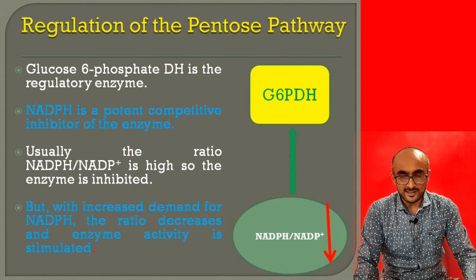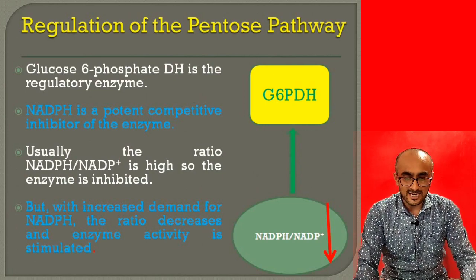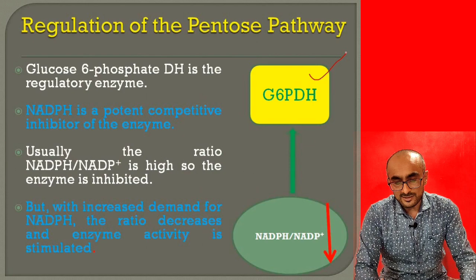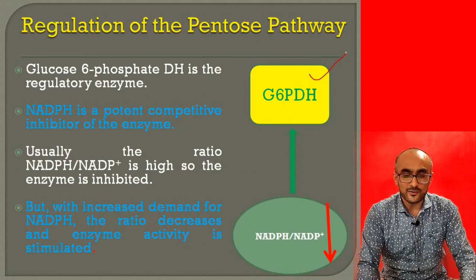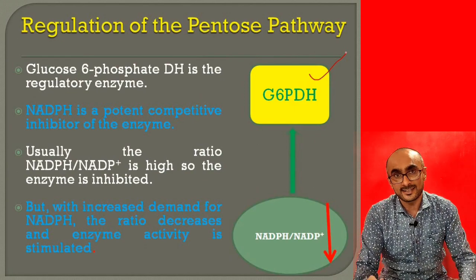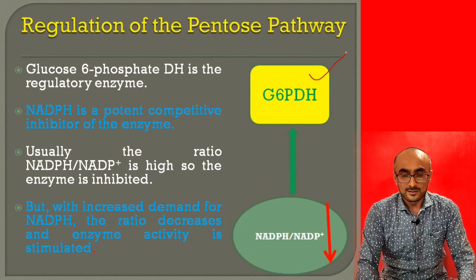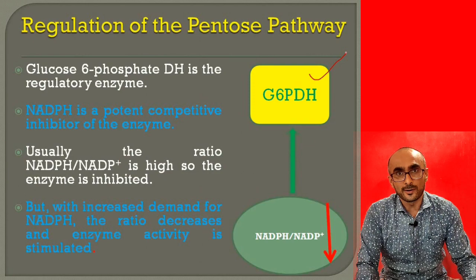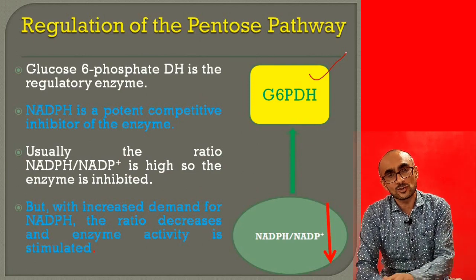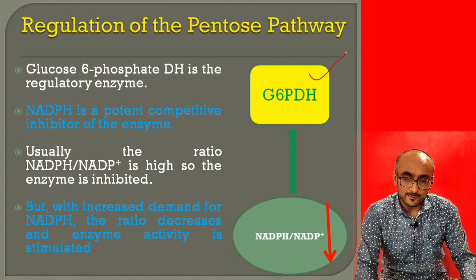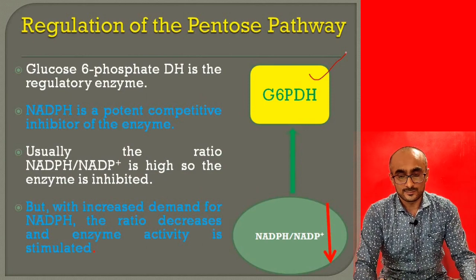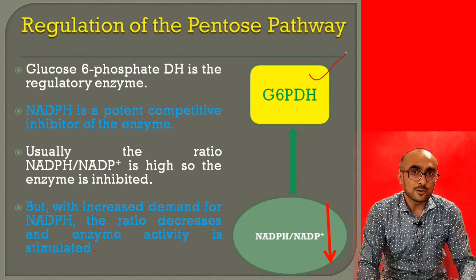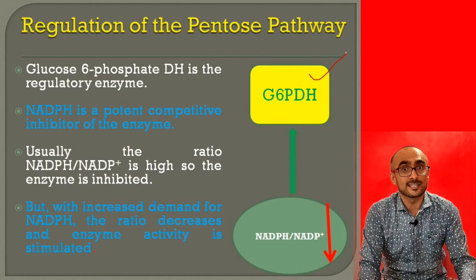The pentose phosphate pathway is regulated by the first enzyme of the pathway: glucose-6-phosphate dehydrogenase. This enzyme is regulated by the concentration of NADPH in the cell. Since NADPH is also a product of this enzyme, if NADPH is sufficient in the cell, the pathway does not need to continue. High NADPH concentration inhibits glucose-6-phosphate dehydrogenase. In fact, NADPH acts as a competitive inhibitor, binding to the same site as NADP+.